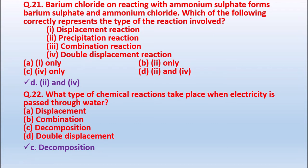Question 22: What type of chemical reaction takes place when electricity passes through water? Options: displacement; combination; decomposition; double displacement. When electricity passes through water, that is electrolysis — electrical decomposition. Decomposition reaction has three types: thermal decomposition, electrical decomposition, and photo decomposition. So the correct answer is decomposition reaction.